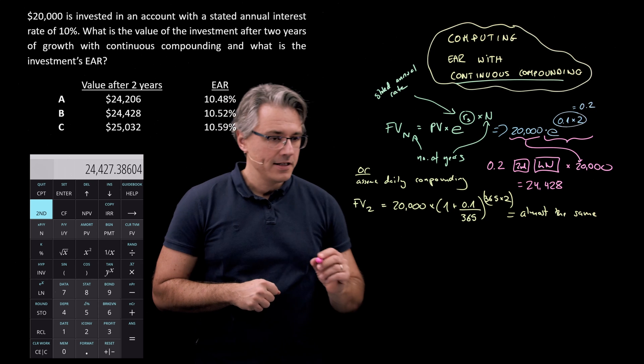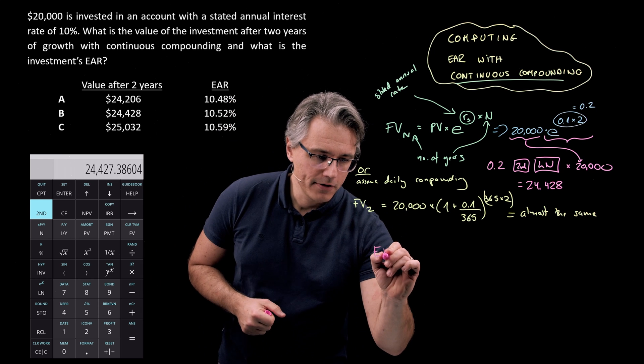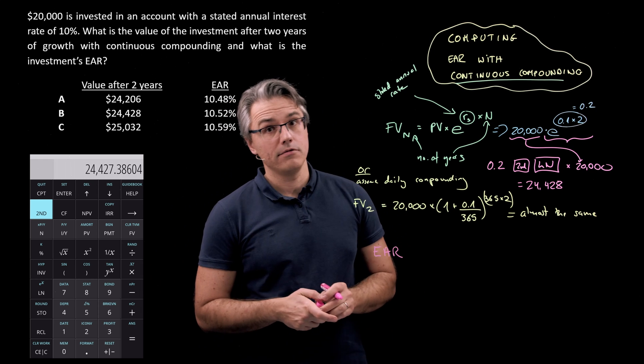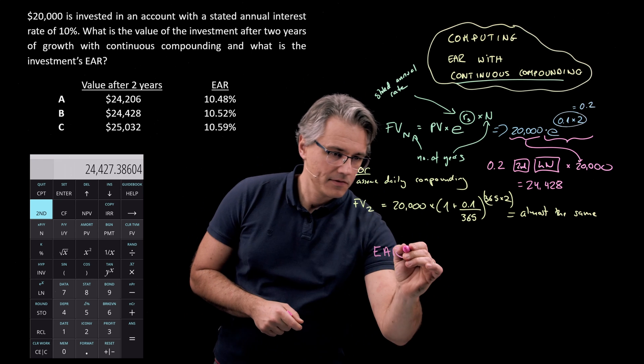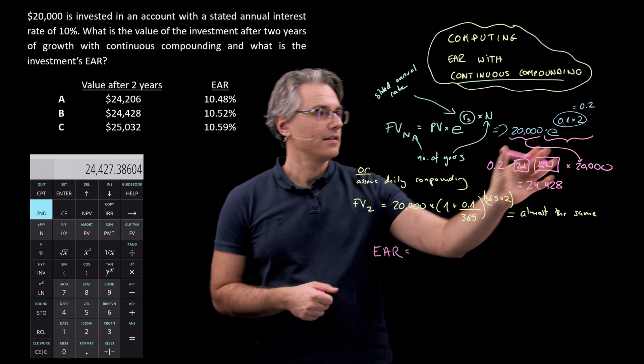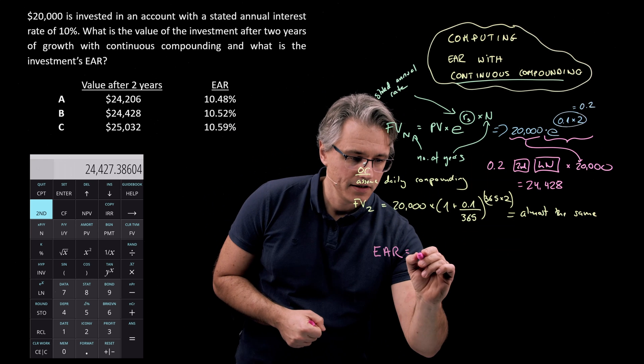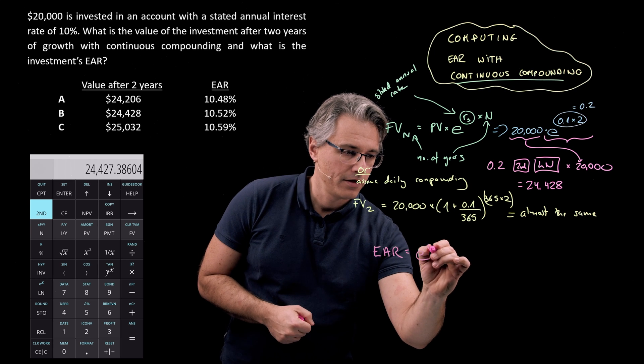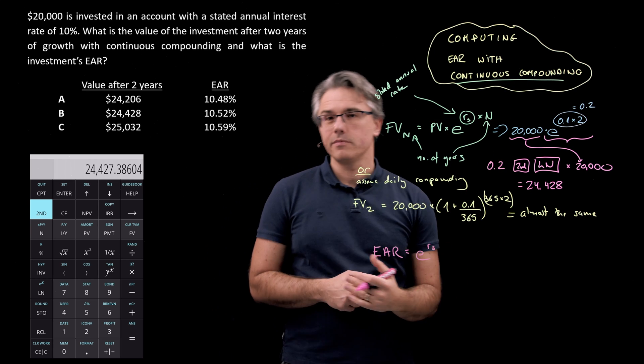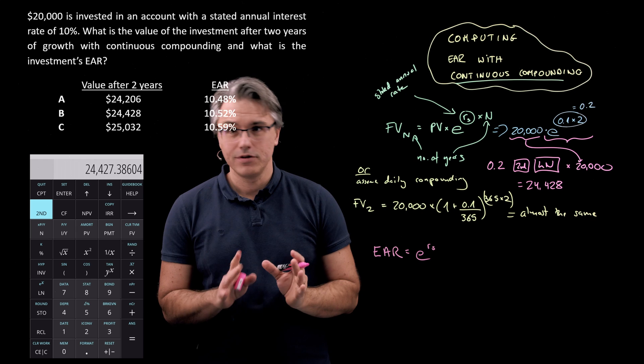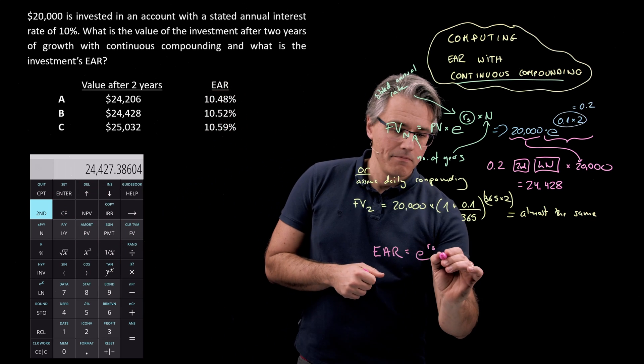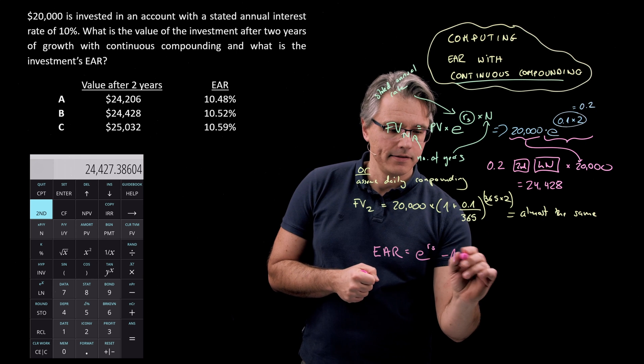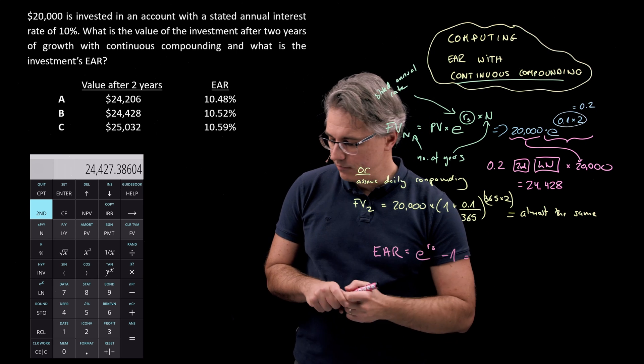Now for the EAR component of the question, what's the effective annual rate here? The relevant thing to do is simply to take this component, E to the power of R_S, but without them multiplying by 2. We don't need the N, which is simply scaling it up to more than one year, minus 1, and that's going to be the result.